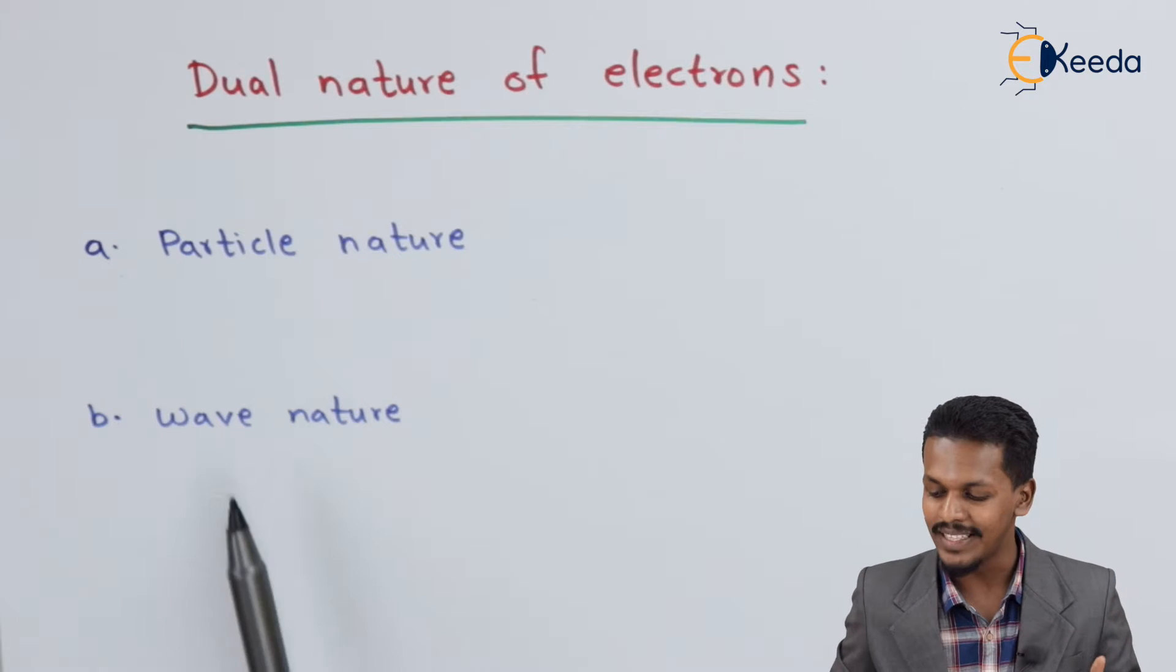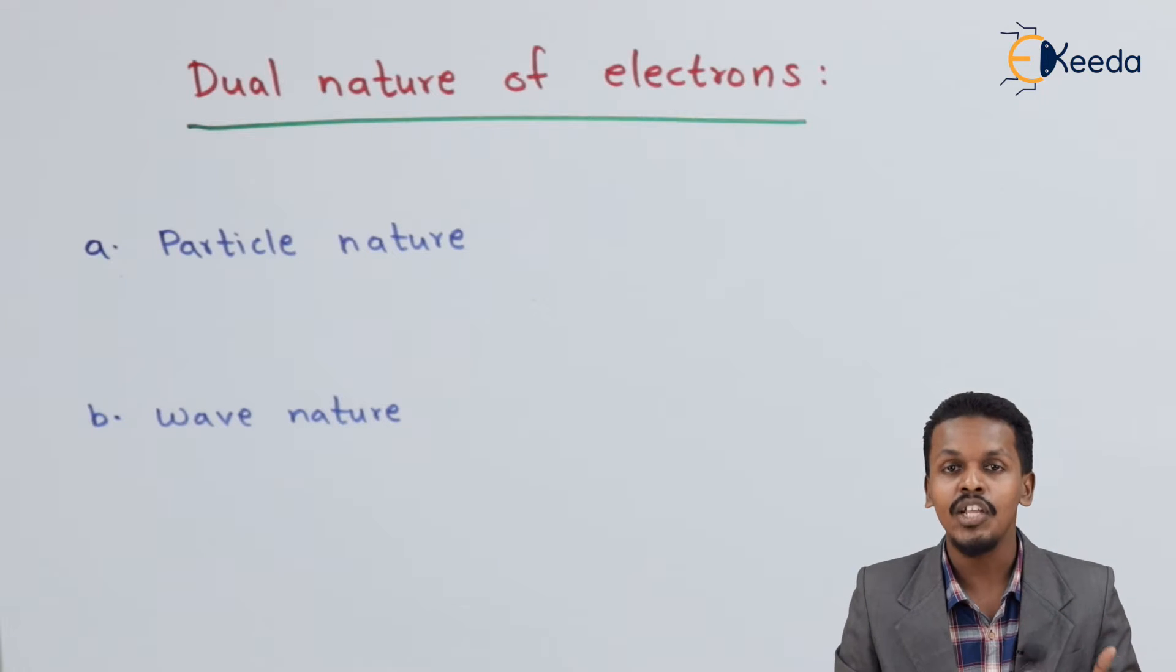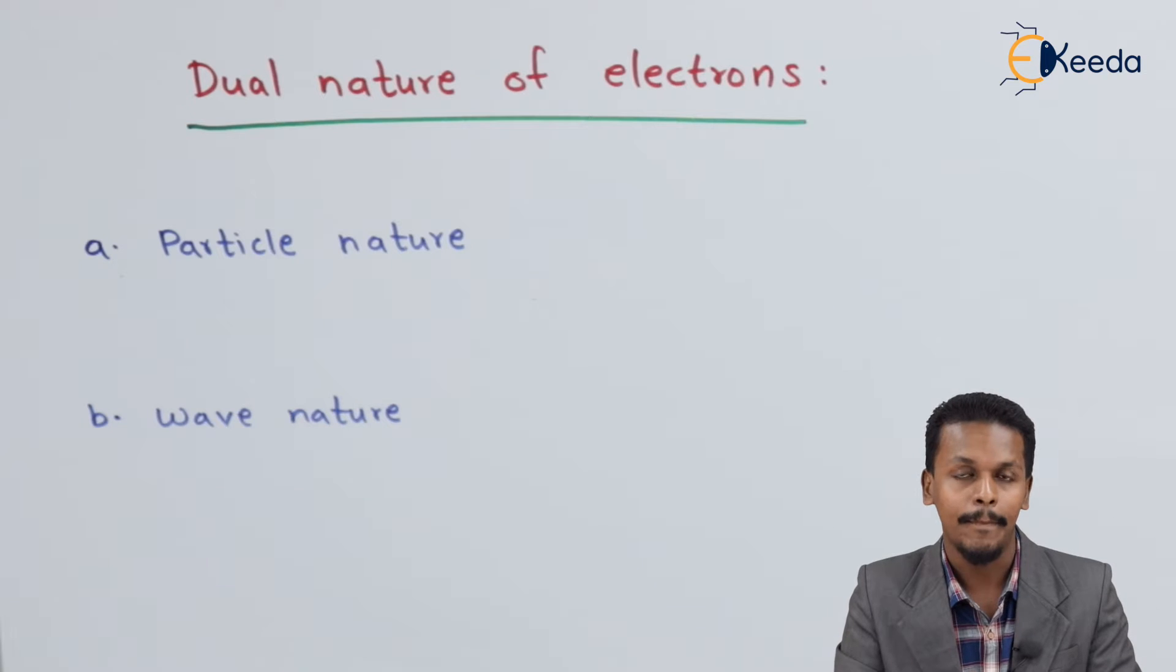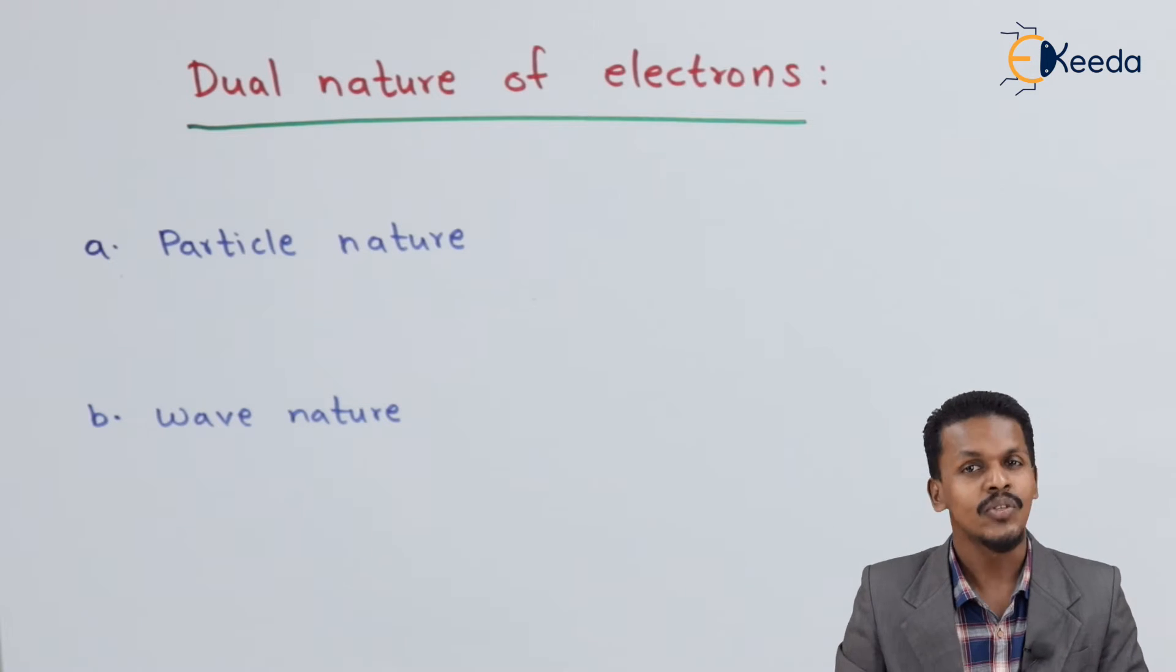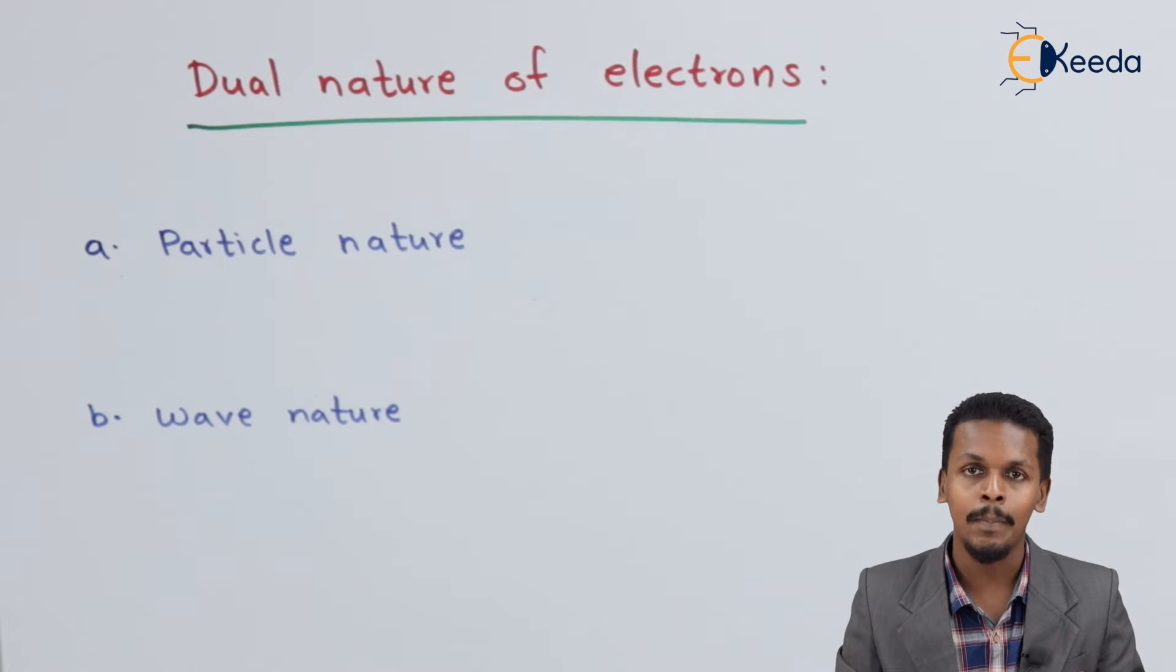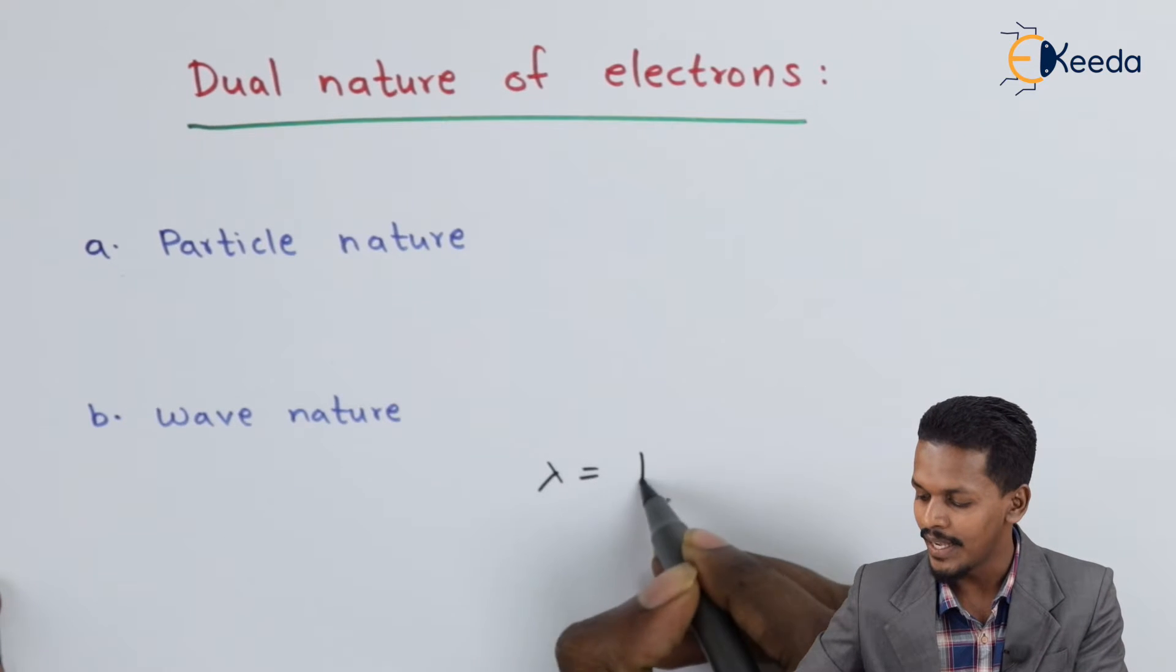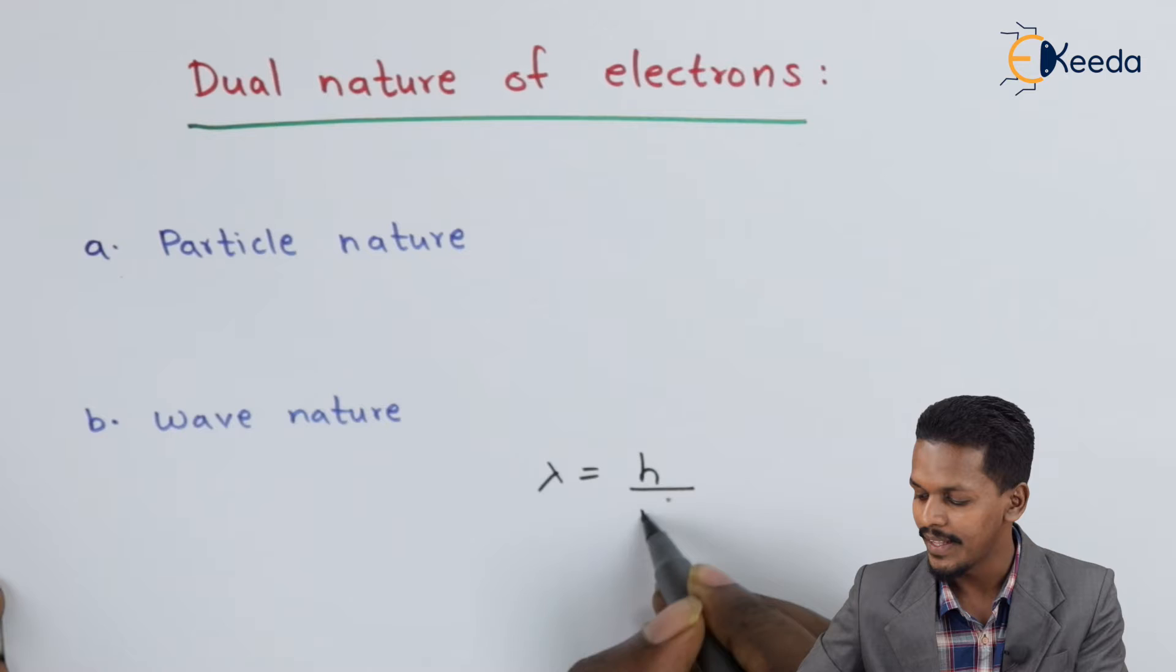But now let me discuss the wave nature. The wave nature indicates that the electron can show the phenomenon like diffraction, which is proved by de Broglie's equation. This wave nature can be explained by the de Broglie equation, that is, lambda equals H divided by Mv.